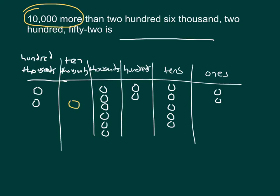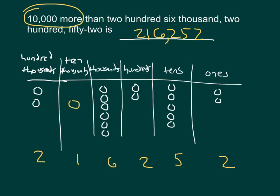After doing that, I'll write the digits underneath our place value chart: 200,000s, 110,000s, 6,000s, 200s, 5 tens, and 2 ones. I'll write that number on the line — 216,252 — place my comma, and read that number: 216,252. Let's read this whole sentence: 10,000 more than 206,252 is 216,252.